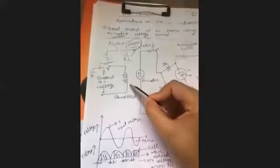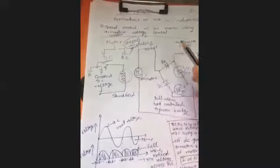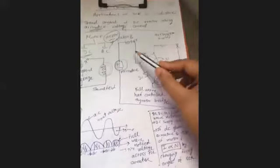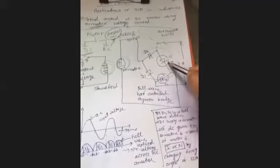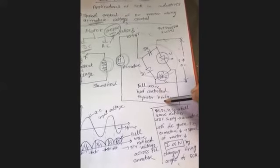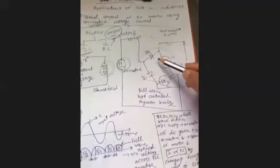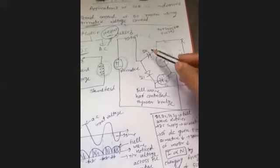This is the DC input voltage going into the armature. The circuit uses a full-wave half-controlled thyristor bridge converter, using 2 diodes and 2 SCRs. This half-controlled full-wave bridge provides the output to the armature.